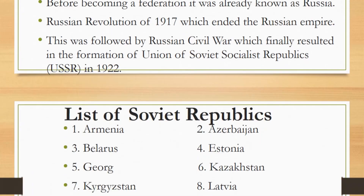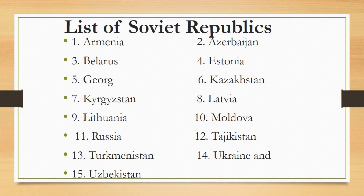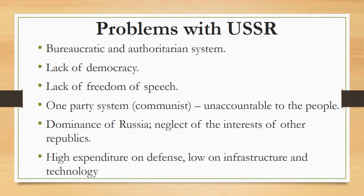The USSR had a total of 15 republics before its disintegration in 1991. Russia was one of the republics. The members of the union were: Armenia, Azerbaijan, Belarus, Estonia, Georgia, Kazakhstan, Kyrgyzstan, Latvia, Lithuania, Moldova, Russia, Tajikistan, Turkmenistan, Ukraine, and Uzbekistan.